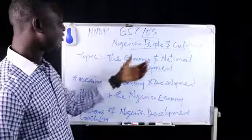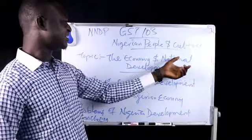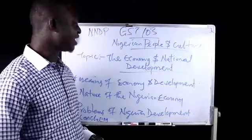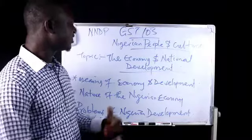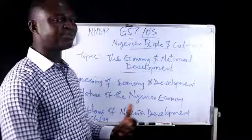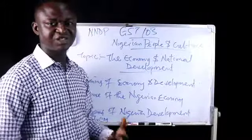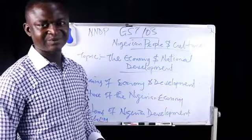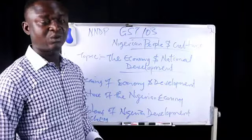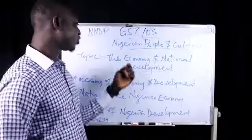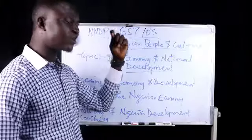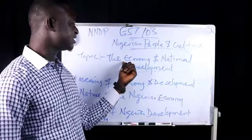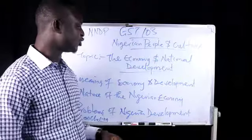Now it is time to look at the Nigerian economy and national development. The economy has to do with everything that revolves around the production, the distribution, the exchange of goods and services within the society. Anything that involves production, distribution, consumption, and exchange of goods and services within the society is a factor of the economy.